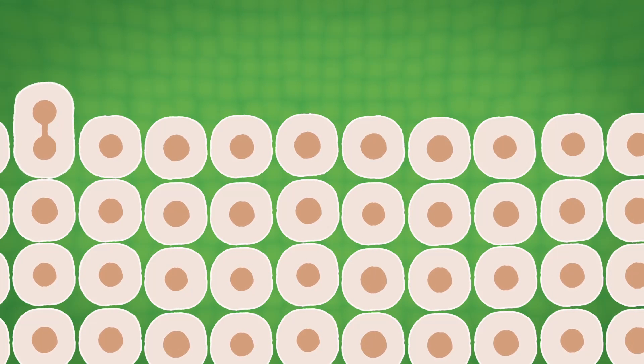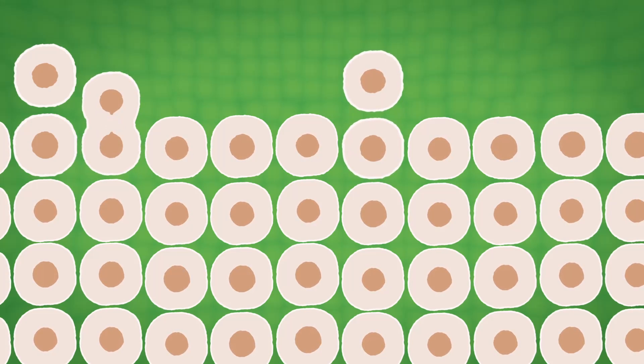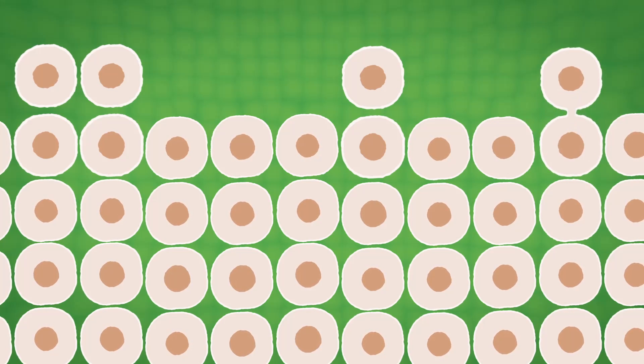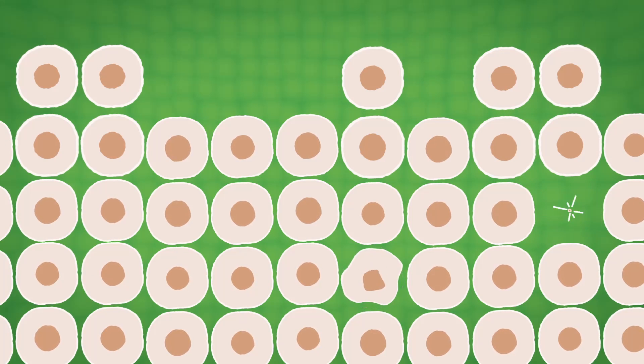Usually cells divide in a controlled way to make new cells. When a cell is no longer needed or can't be repaired, it gets a signal to stop working and die.